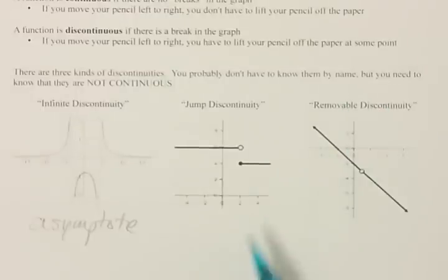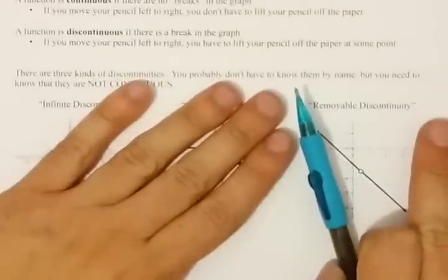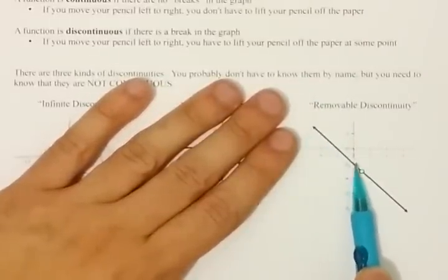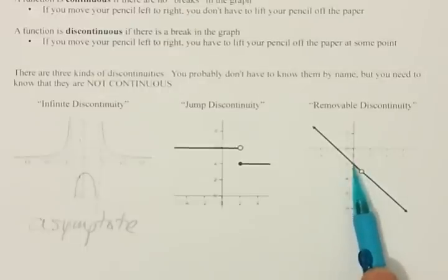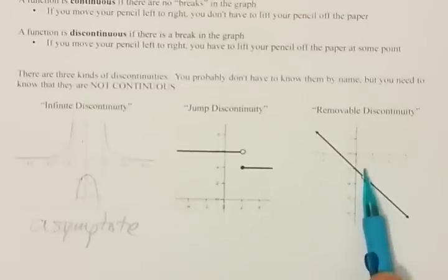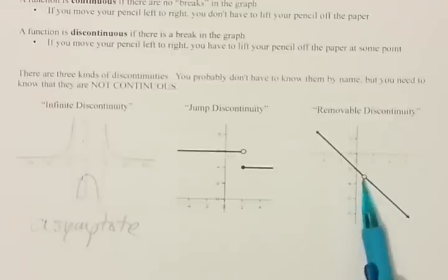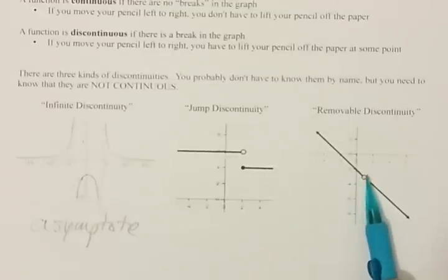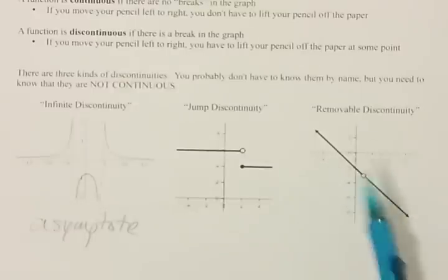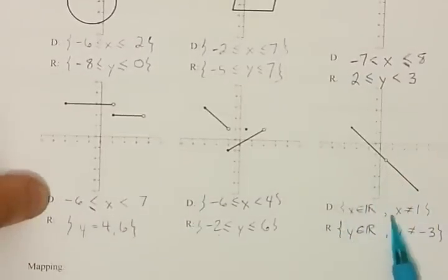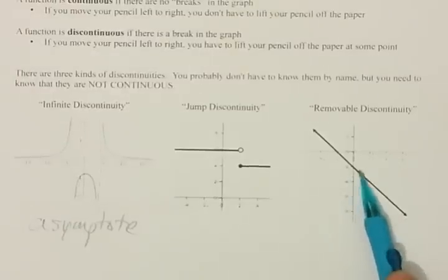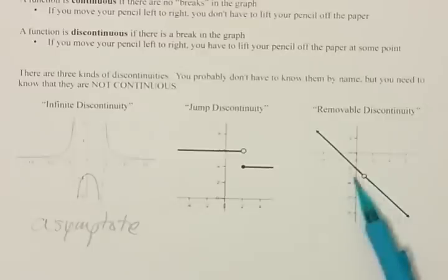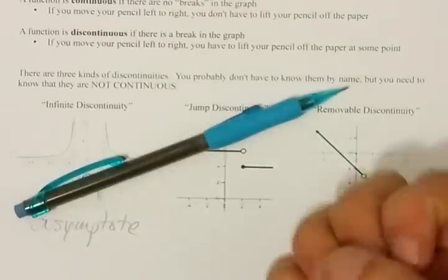We have what's called a removable discontinuity — it's so close to a continuous function. It's a regular line, which is continuous, but the problem is there's a hole in it somewhere. The open circle means you can plug in any value near that point, but you can't plug in that value exactly. This is x equals 1. If it weren't for that one tiny hole, this would have been a continuous function — that's why we call it a removable discontinuity. Removable discontinuities have a hole in the domain because we have an open circle, so we can't plug x equals 1 in.